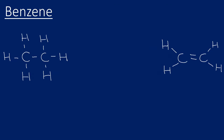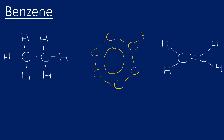Where does benzene fit in terms of bond length and bond strength? It sits directly between the two. The bonds in benzene are stronger than the bonds in alkanes but weaker than the bonds in alkenes. Likewise with bond length — the carbon-carbon bonds in benzene are all the same length, longer than a double bond in an alkene but shorter than the single bonds in an alkane.